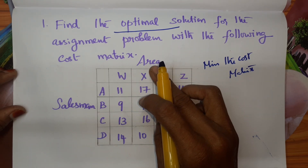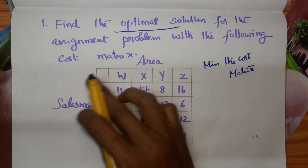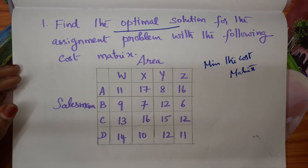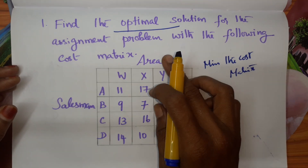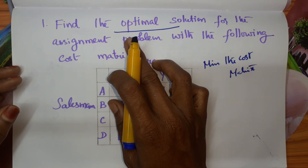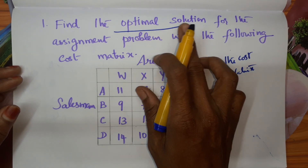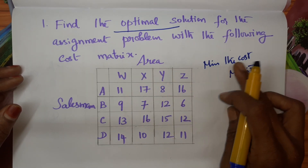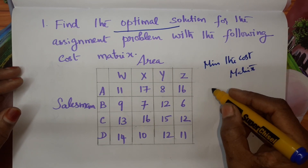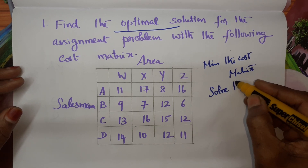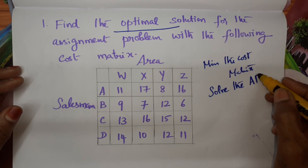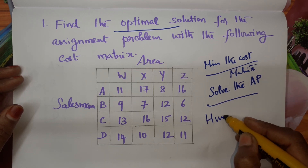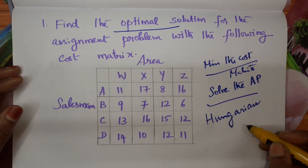If you are assigning a work to a person, we have to pay for them. Our aim is we have to minimize the payment. In your question, either they will ask you to find the optimal solution, or they will ask you to optimize the cost matrix, or find the minimum cost matrix, or simply solve the given AP. For all these questions, the method we are going to use is called the Hungarian method.